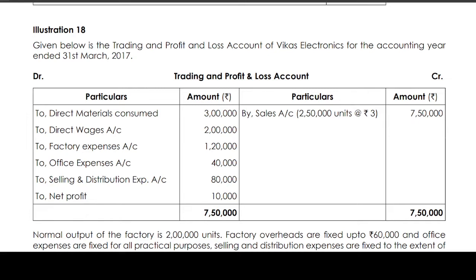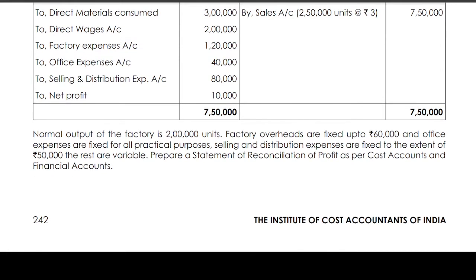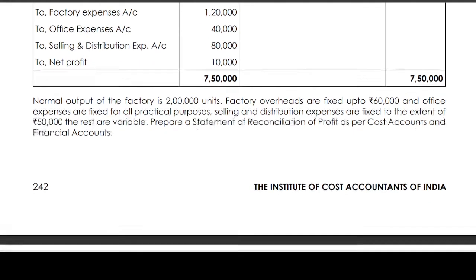The normal output of the factory is 2 lakh units. Factory overheads are fixed up to ₹60,000. Office expenses are fixed for all practical purposes. Selling and distribution expenses are fixed to the extent of ₹50,000, and the rest are variable. We need to prepare a statement of reconciliation of profit as per cost accounts and financial accounts.